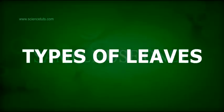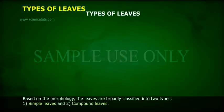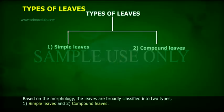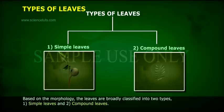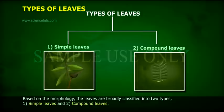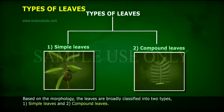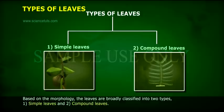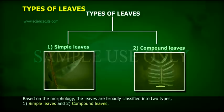Types of Leaves. Based on the morphology, the leaves are broadly classified into two types: one, simple leaves, and two, compound leaves.